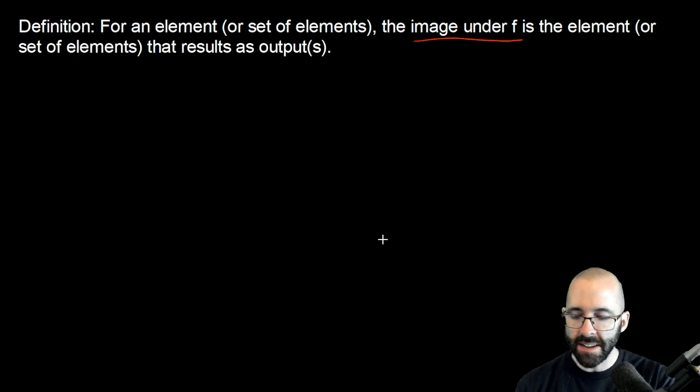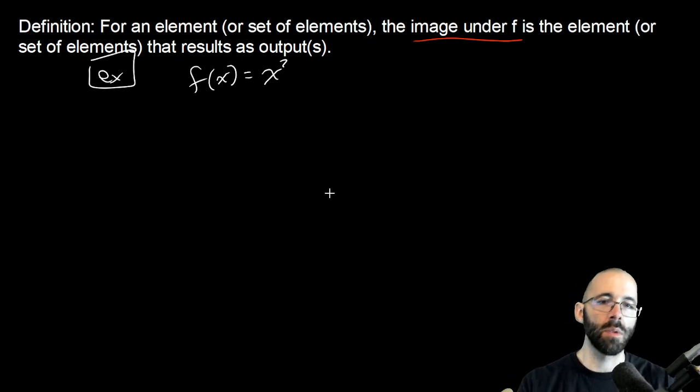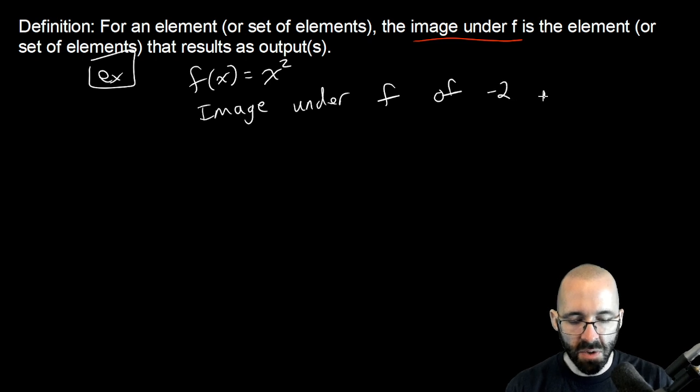Let's break that down. As a little example, let's say f(x) is our traditional quadratic x squared - easy, comfortable, normal math that y'all have seen before. So then the image under f of negative two is four.